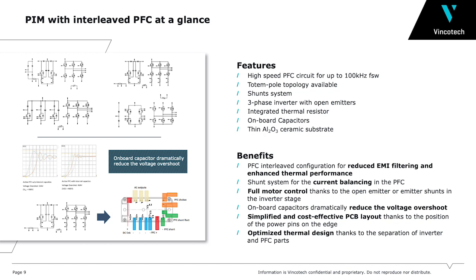The onboard capacitors significantly reduce the voltage overshoot, as shown in the figure on the left. Special attention is also paid to the layout and pinout of these modules. The layout is optimized to achieve the best possible thermal performance by properly separating the various module blocks, while the pinout has been carefully defined to ease routing on the PCB. All the power pins are located on the edge of the module, enabling easy routing with a minimum number of PCB layers.